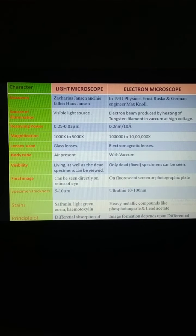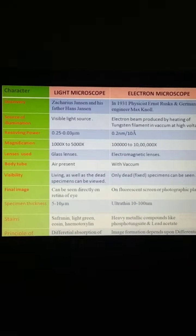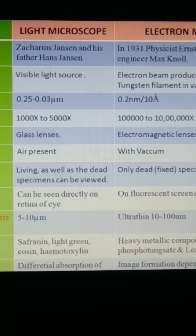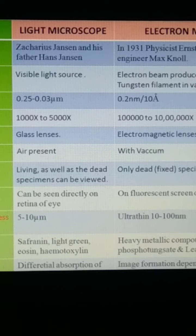Now let us look at the difference between the light microscope and the electron microscope. First, the difference in discovery: the light microscope was discovered by Janssen and Janssen, while the electron microscope was discovered by Ruska and Knoll. The next difference is in their source of illumination. In the case of a light microscope, we use visible light. But in electron microscopy, we use electrons, which are generated by heating a tungsten filament in a vacuum under very high voltage. That is why the magnification is very high.